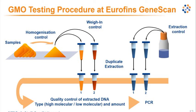At the end of the DNA extraction protocol, the quality and quantity of the extracted DNA is verified to confirm it matches expectations for the provided sample. If these parameters match our expectations, we can use the DNA for the PCR analysis — an enzymatic reaction that allows the detection of specific DNA sequences.